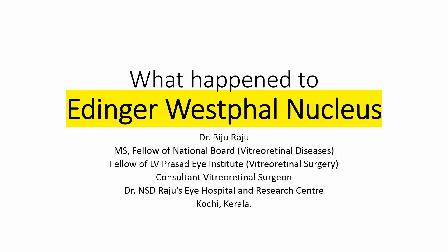We have been taught that the Edinger-Westphal nucleus is the accessory oculomotor nucleus whose neurons send pre-ganglionic cholinergic fibers to the ciliary ganglion, and it plays a major role in pupillary reaction and accommodation of the crystalline lens.